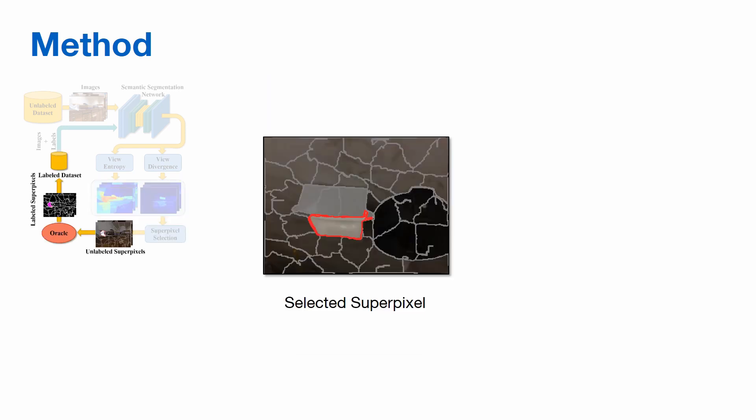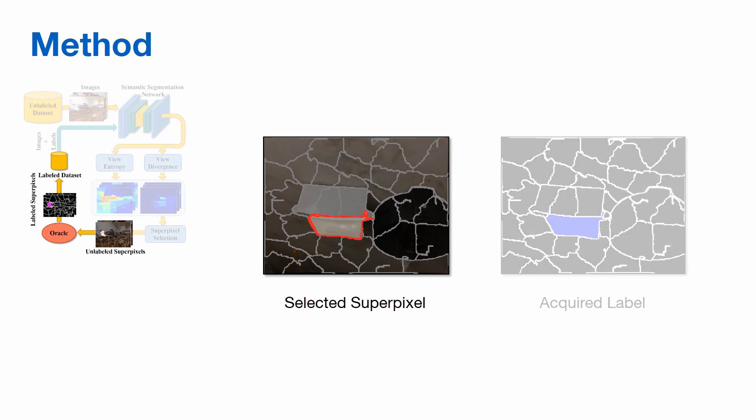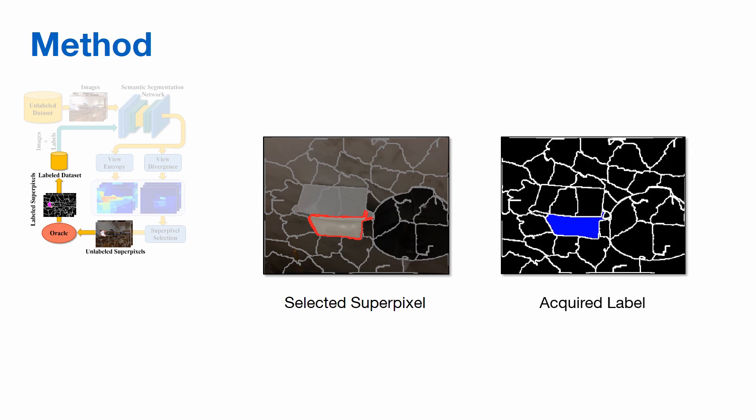Finally, for all the selected superpixels, we acquire the ground truth labels and add them to the labeled dataset. The whole active learning cycle then repeats until the labeling budget is exhausted or the entire dataset is labeled.